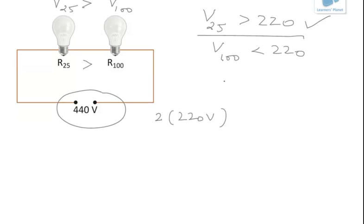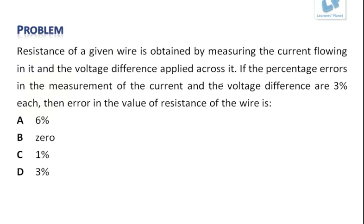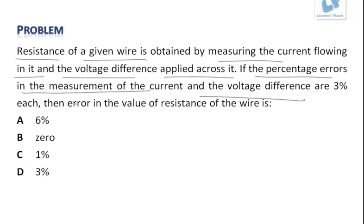Now let us look at the next problem. This problem is also a very simple problem. Resistance of a given wire is obtained by measuring the current flowing through it and the voltage difference applied across it. If the percentage errors in the measurement of the current and the voltage difference are 3% each, then the error in the value of resistance of the wire is...